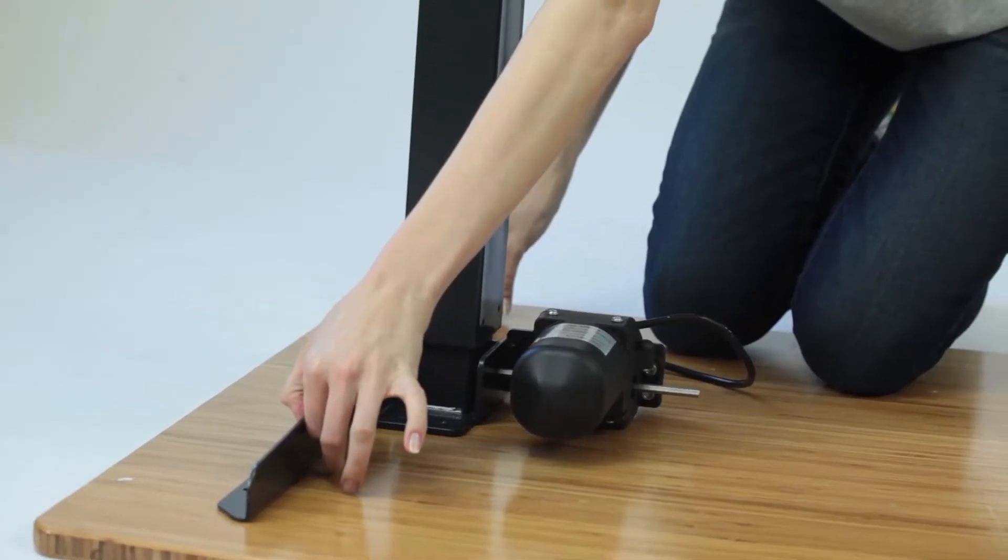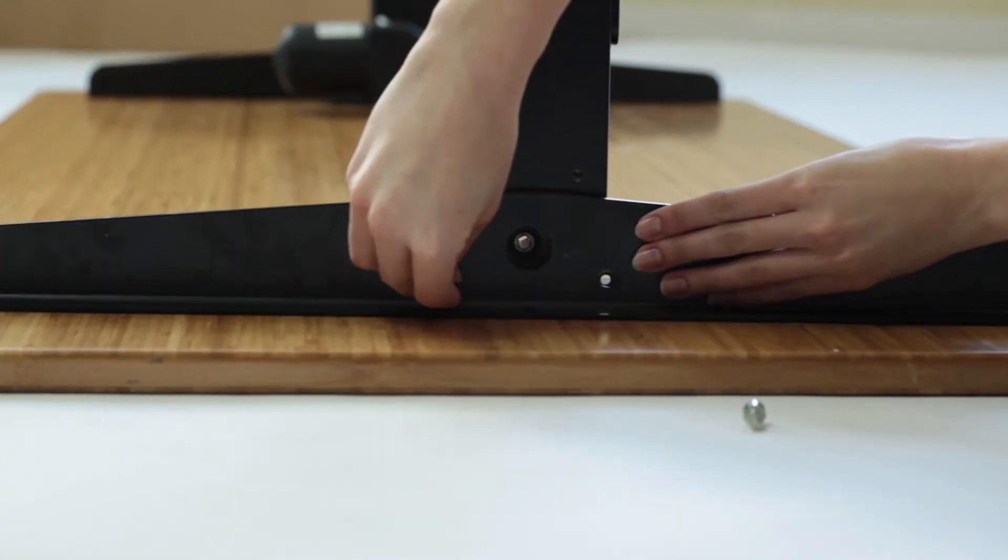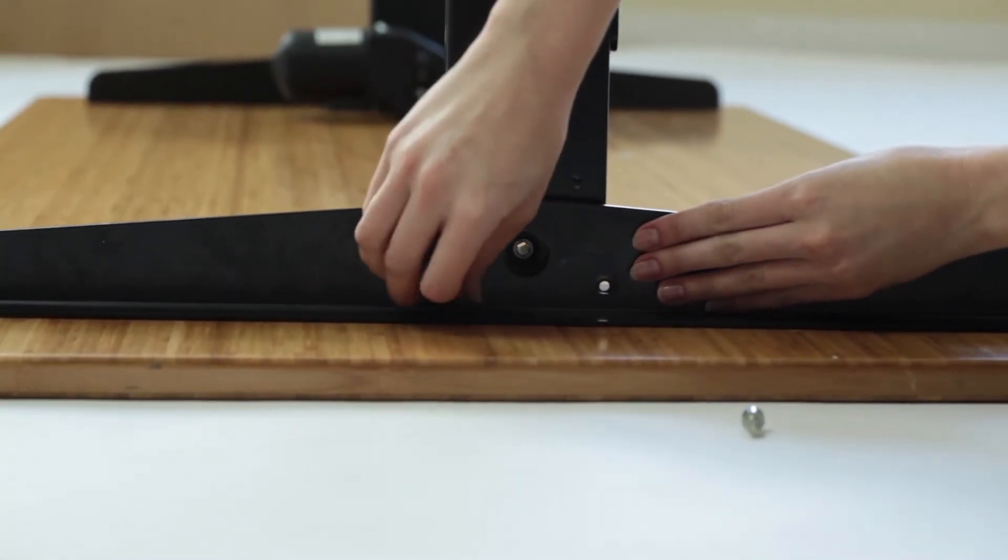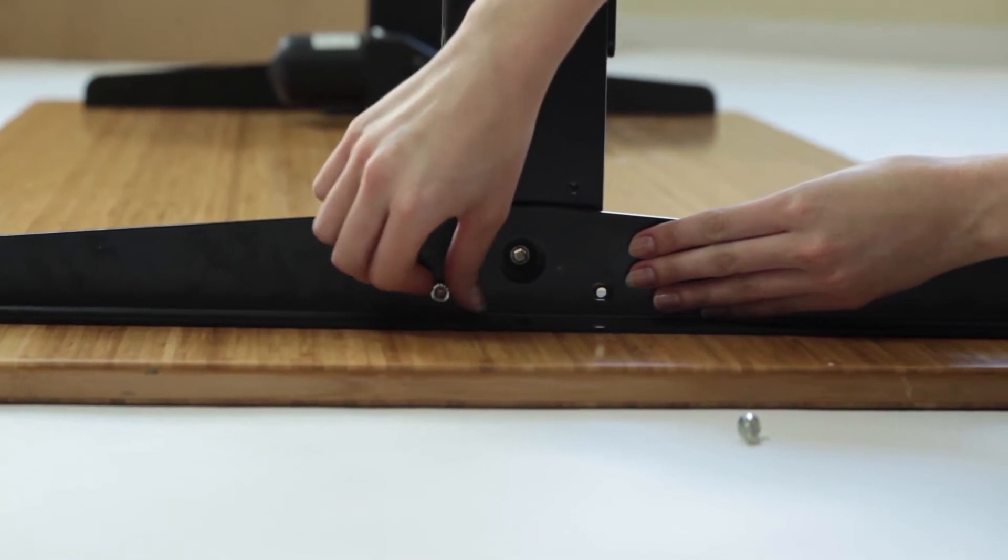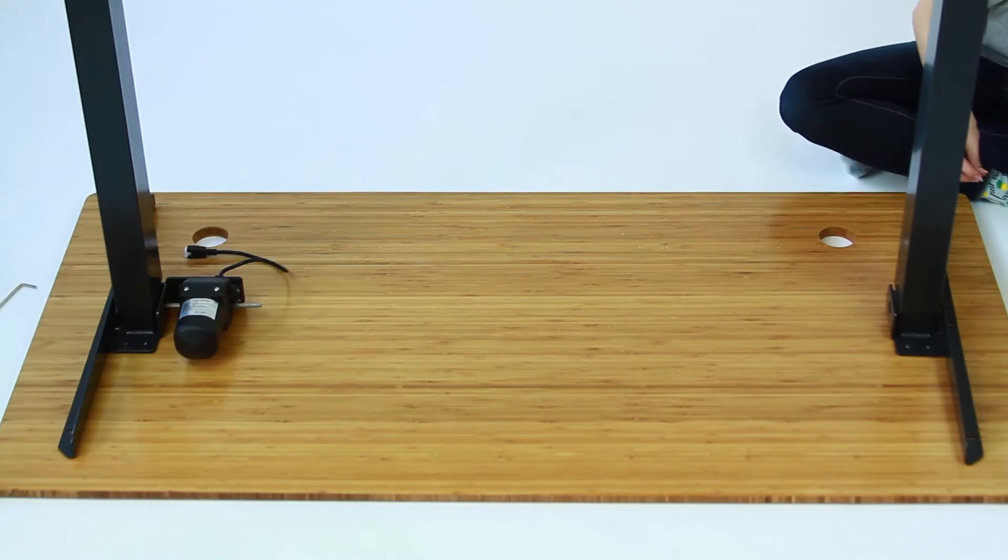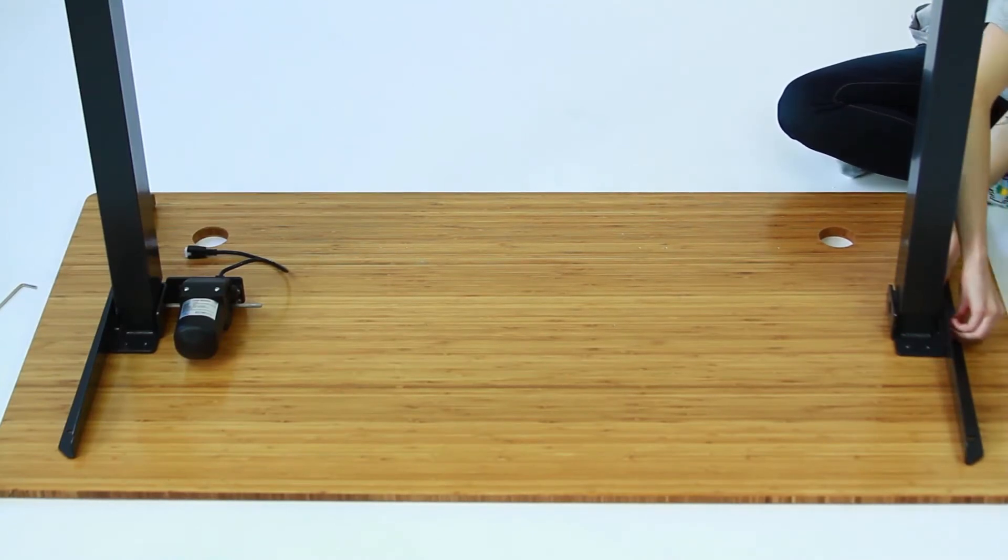Now attach the support braces to each leg. Make sure the flat side is touching the desktop and the large hole in the support braces match up with the large hole in the legs. Attach the support braces using four M6 by 12 bolts. Pro tip! If you're using a Standesk top place the support braces on the desk so they line up with the pre-drilled holes. This makes it easier to determine what length the middle slats need to be.